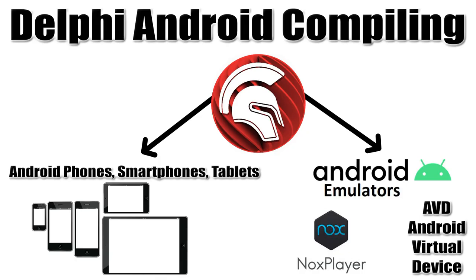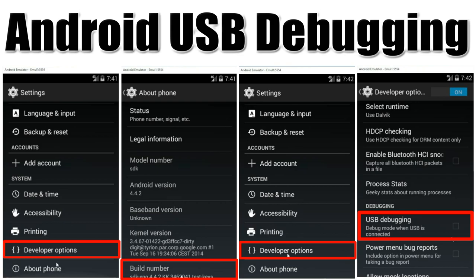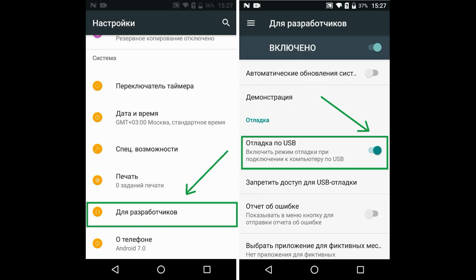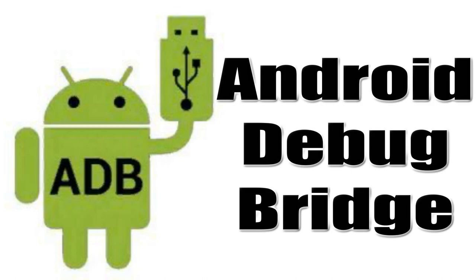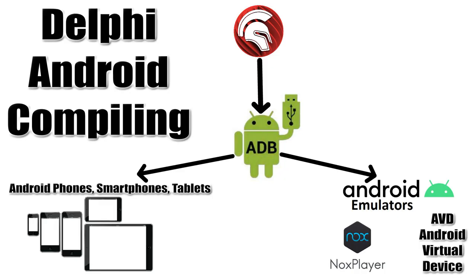To compile applications for Android, you need either a real device running Android — a mobile phone, smartphone, tablet, or similar — or you can install and configure an Android emulator on your computer. If you connect a real device, go to your phone or tablet settings and turn on developer mode by tapping 'Build Number' about 7 times. Then go to Developer Options and enable USB Debugging. You also need to install ADB (Android Debug Bridge) for your device — without it, the Delphi environment may not see the Android device.